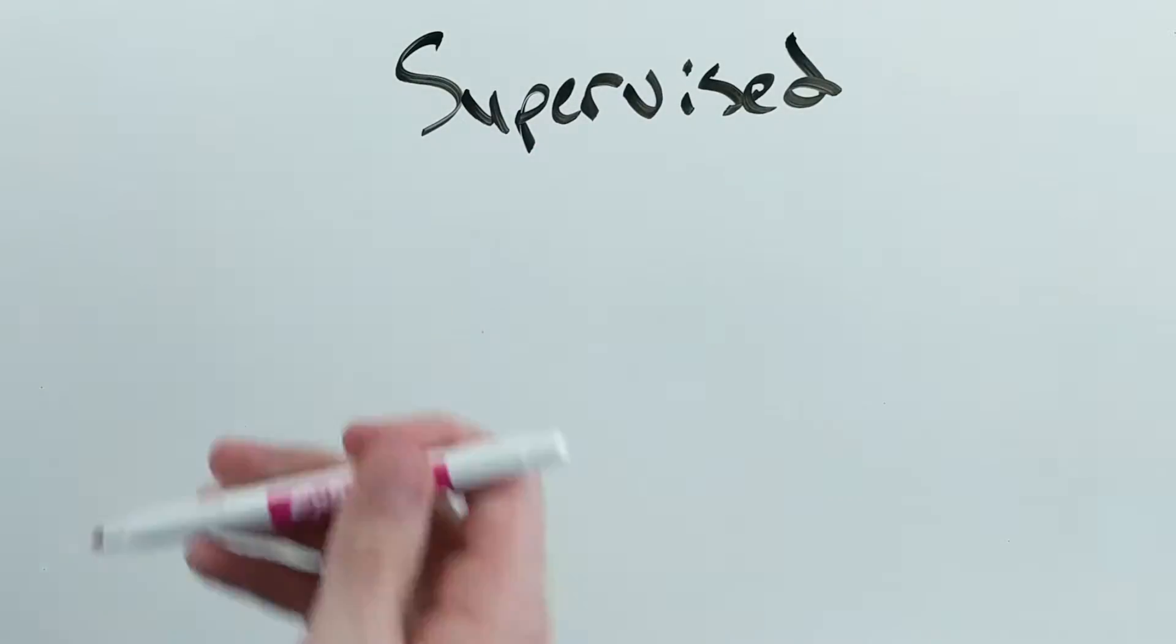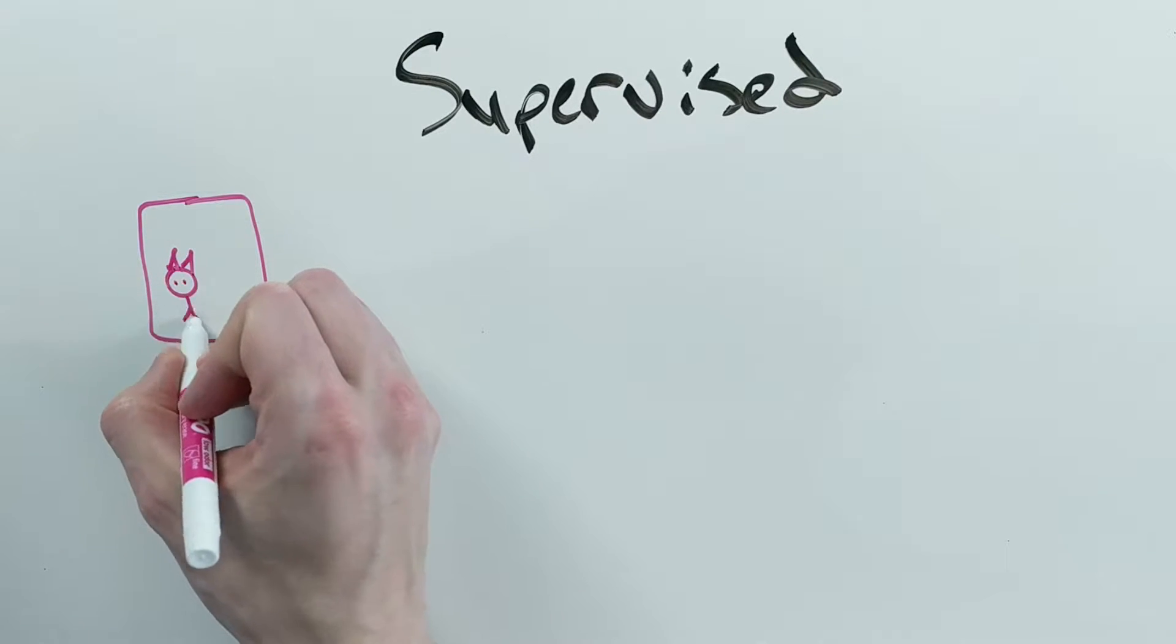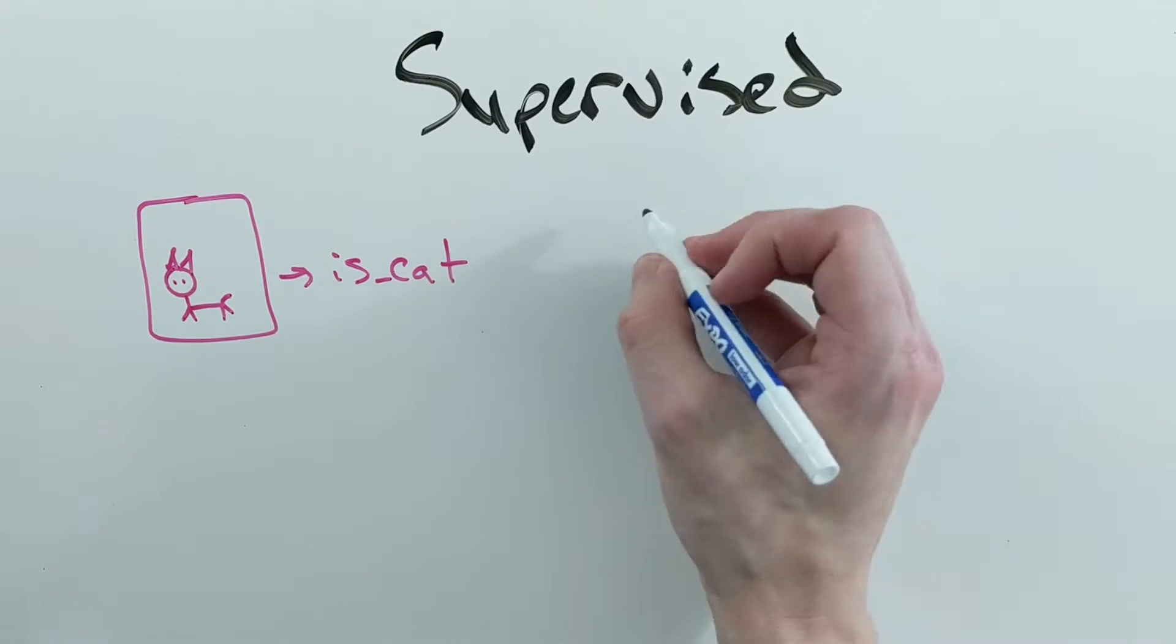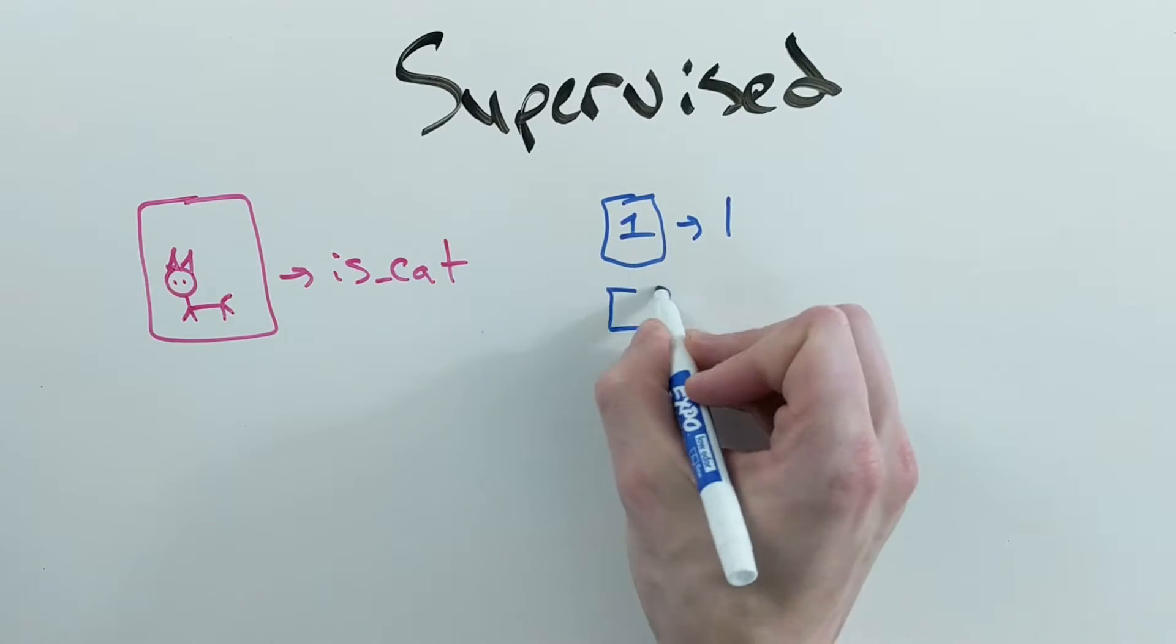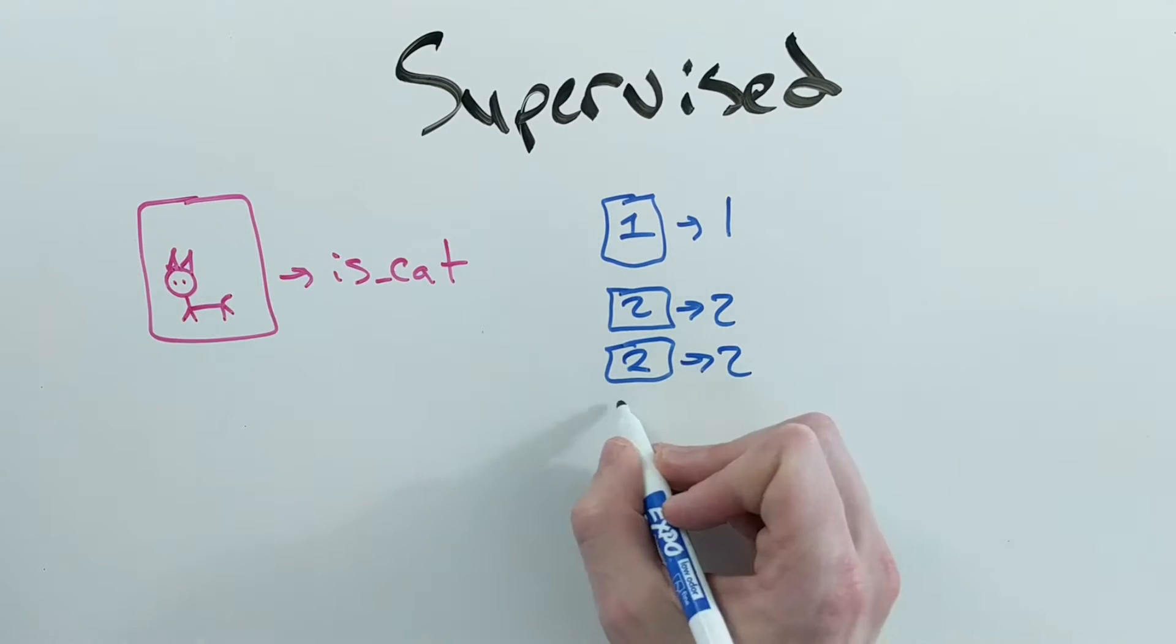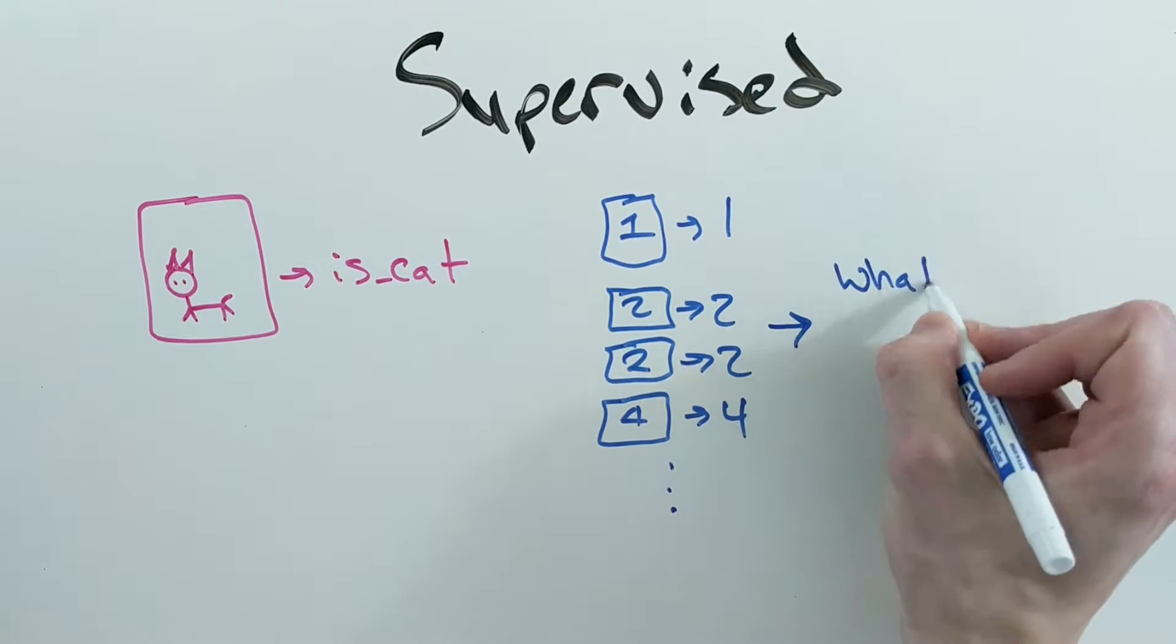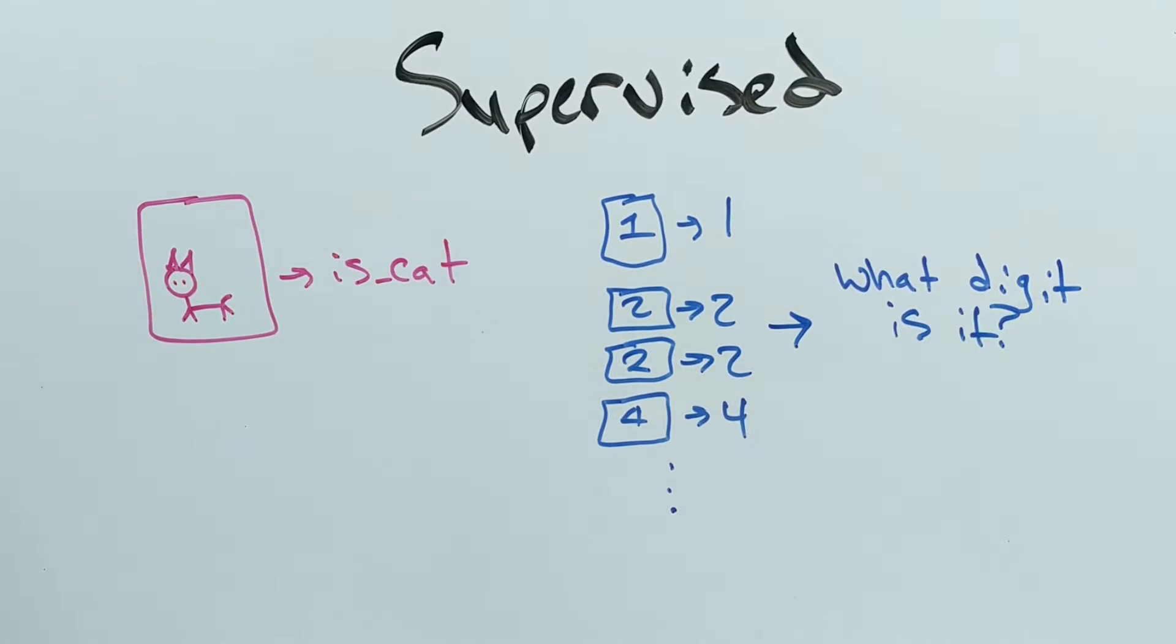Supervised learning is when you try to learn a model from data that is labeled, that is, you know what the algorithm is supposed to output for some given inputs, and you try to learn to predict those outputs. For example, given that you have a bunch of pictures of handwritten digits and what those digits are supposed to be, you would use supervised learning to try to take in an image and make a prediction about what the digit is in that picture.